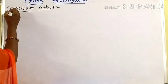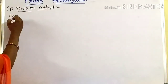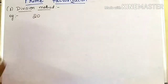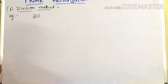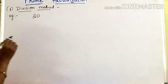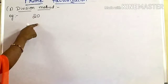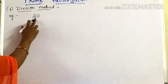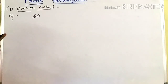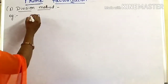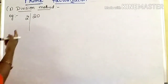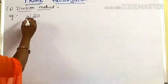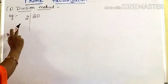The first method is the division method. I will take an example and explain. If I take 20, how do we do the division method? In this method, first we divide that number by the smallest prime number which divides the number exactly — meaning we should get remainder as 0. The smallest prime number is 2. When you divide 20 by 2, you get remainder 0. But if you take 3, you will not get remainder 0. So you take the smallest prime number which divides the number exactly.